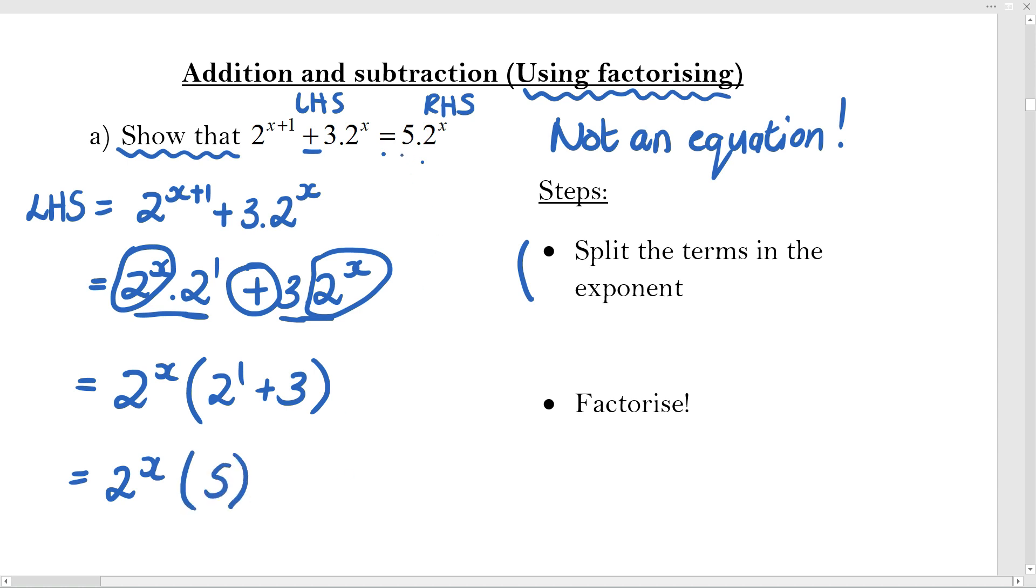Now that is 2 to the x multiplied by 2 plus 3, which is 5. Hang on, that's exactly what I had to get. So that is actually 5 times 2 to the x, just written in a slightly different way. And that equals my right hand side. That was the factorizing and this was the splitting up of terms.